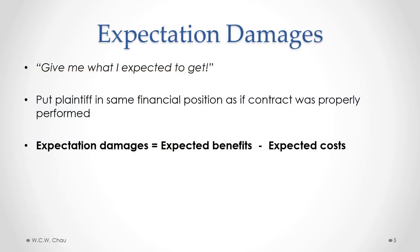With expectation damages, we're compensating the innocent party to put that plaintiff in the same financial position as if the contract had been properly performed. The mathematical equation is: expectation damages equals expected benefits minus expected costs. The expected benefits are what would have been received if the contract had been performed, and the expected costs are what the innocent party would have incurred.